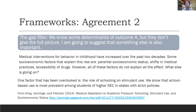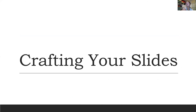Agreement two is the gap filler: we know some things about A, but they don't give the full picture — we're going to fill in some gaps. For example, medical interventions for behavior in childhood have increased over past decades and socioeconomic factors explain this rise. However, these factors don't explain all of the effects. One overlooked factor is the role of schooling: stimulant use is most prevalent among students of higher socioeconomic status in states with strict policies.